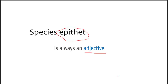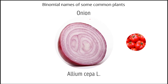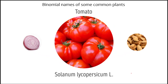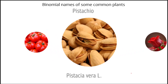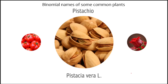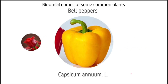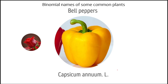With this basic background, we can understand what binomial nomenclature means for plants. Let us look at some common examples. Onion is termed as Allium cepa — the 'L' stands for Linnaeus, the author who described it. Tomato's botanical nomenclature is Solanum lycopersicum, also given by Linnaeus. Pistachio is Pistacia vera, again given by Linnaeus. Bell pepper is Capsicum annuum. Rosa is the genus for rose. These are all different examples.